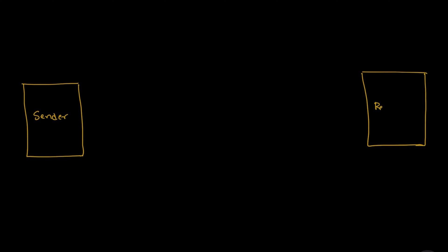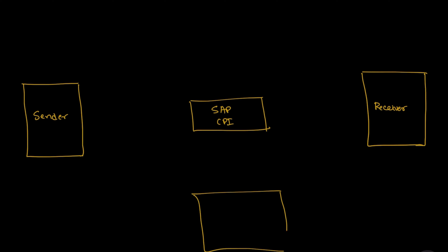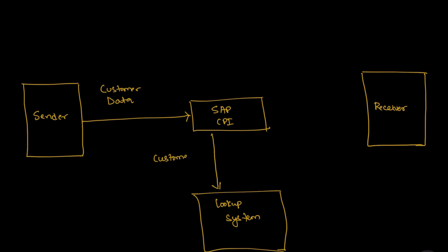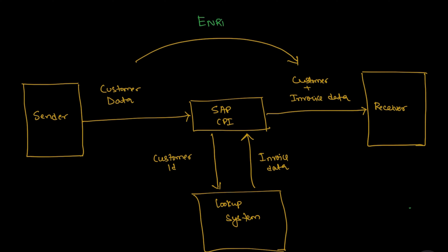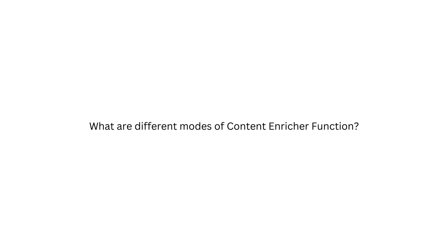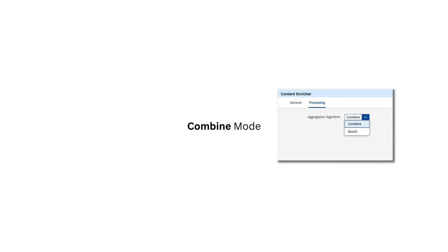In this demo, I have taken a sender which sends customer information to the integration flow. In the integration, I used a content modifier to set some headers and exchange properties. I have used the enrich palette function to enrich the data by using an OData lookup. In the content enricher function, there are two modes: combine mode and enrich mode.